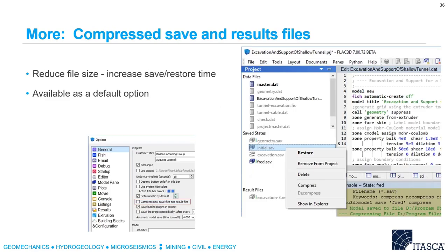Another thing we've added is compressed save files and results files. If you run very large models you can end up with very large files clogging up your hard drive. You can set it up so that it automatically zips files when you hit save and automatically unzips files when you restore, which is potentially very useful.